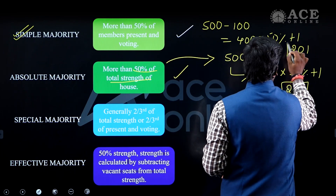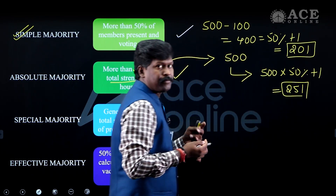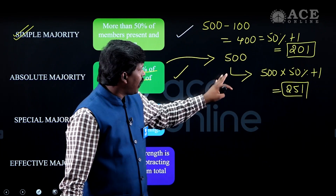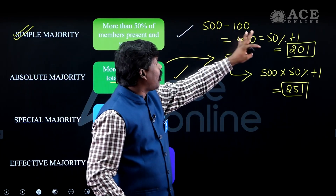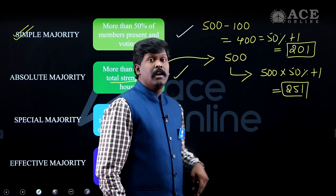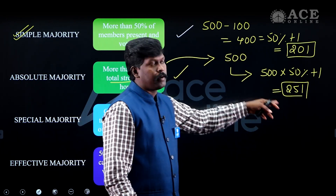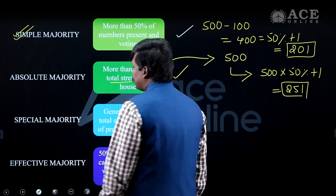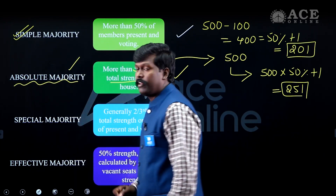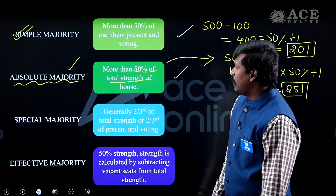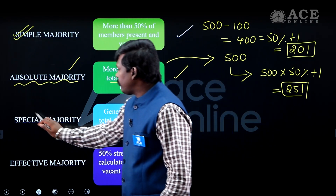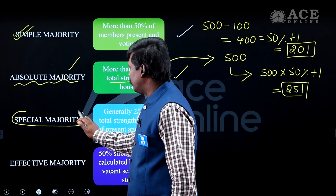For absolute majority, if the total strength is 500 and 100 members are absent, the present strength is 400. But the required majority is still calculated on the total of 500: 50% of 500 plus 1 equals 251. This is your absolute majority — very, very important for the exam.